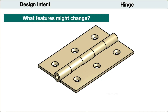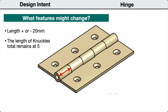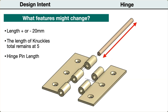First, we can identify any parameters that might change during the design process. For this hinge, we may need to adjust its length. This would be in a range of 20 millimeters larger or smaller. Also, when the length is changed, we want the length of the knuckles to adjust so that they remain at a total of five. Last, we want the hinge pin to update to the new length.